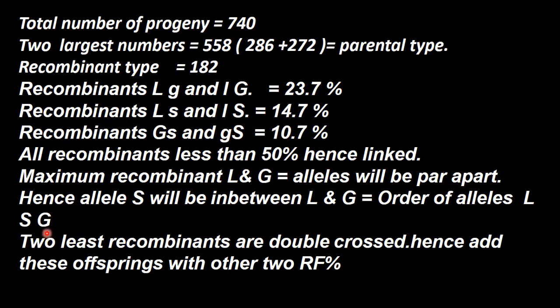We will be getting the gene map. Now, adding 14.7 and 10.7 gives 25.4, but the observed value here is 23.7.